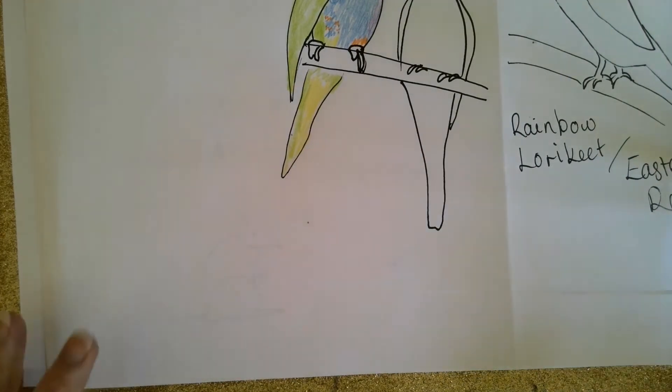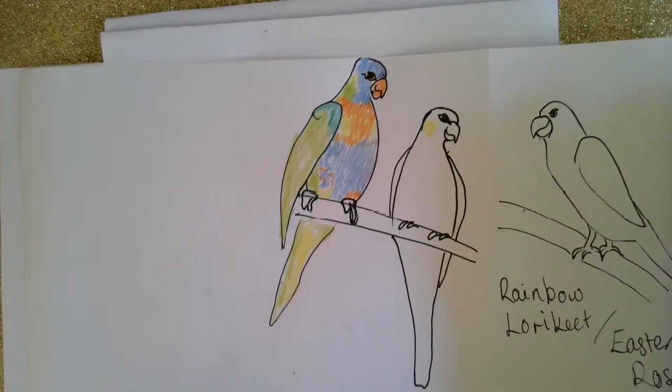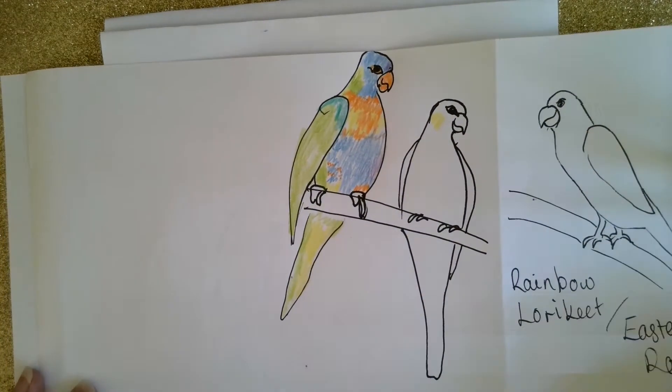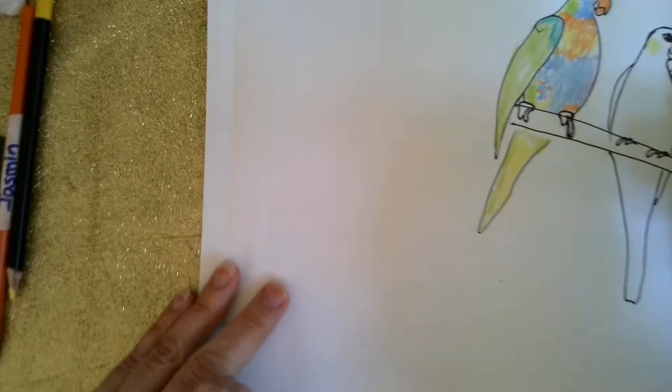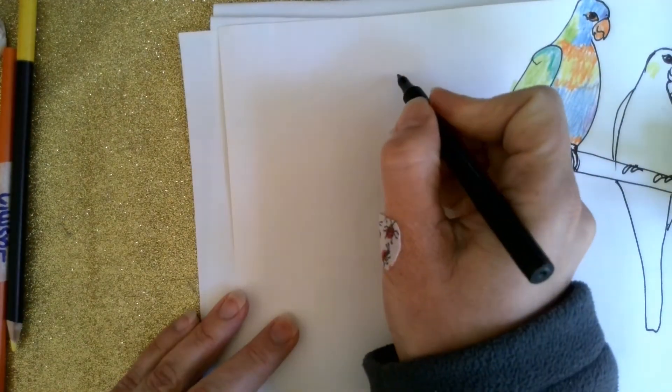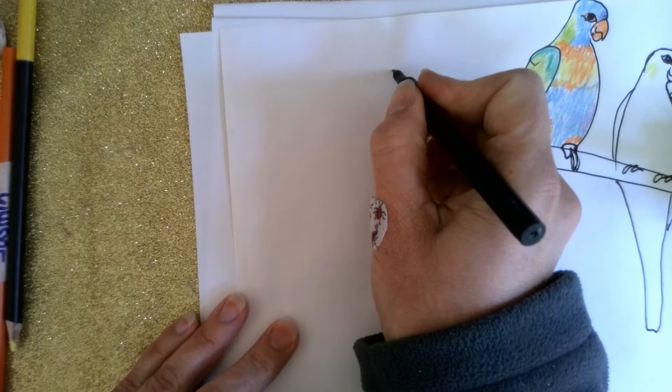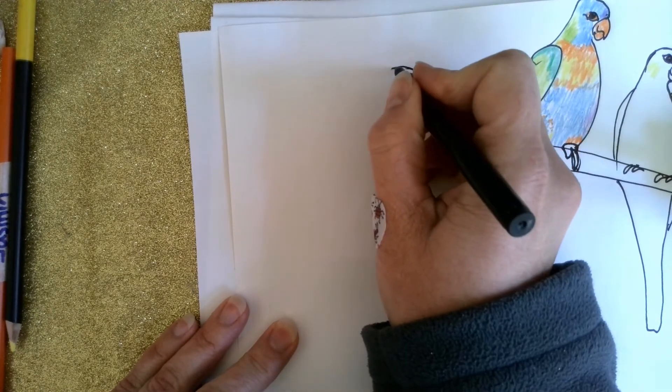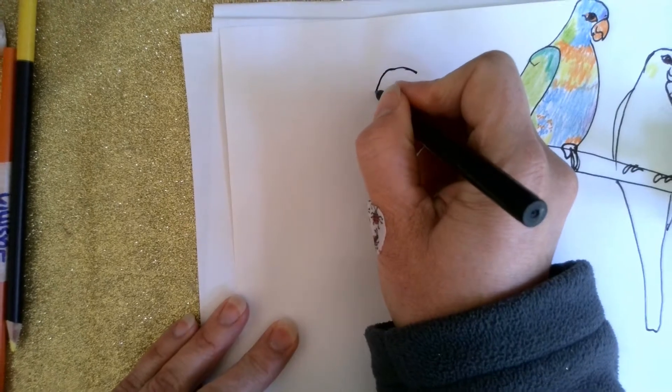Okay, we're going to do a little guided drawing on how to draw a rainbow lorikeet. They have a bit of a flattish sort of head, and then we'll go round it down and stop there.